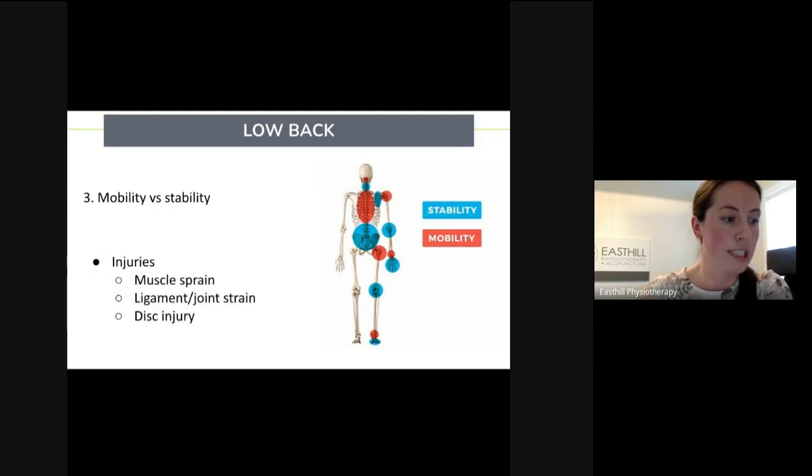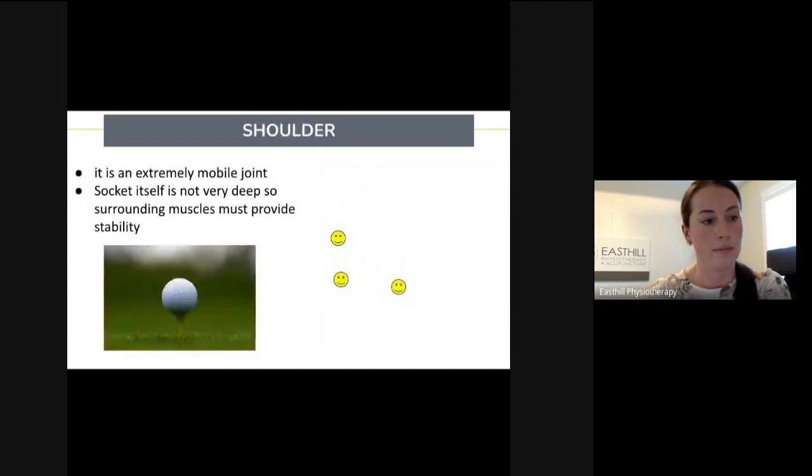So some of the injuries that can happen in our low back are going to be to our muscles, ligaments, joints or discs. So now onto the shoulder.